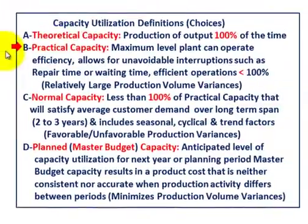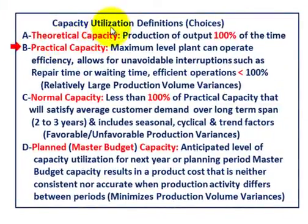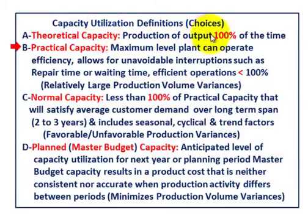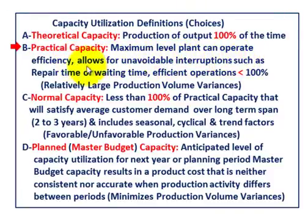The next thing to go over is our capacity utilization definitions — the choices we're talking about. First, theoretical capacity: the production the plant would put out at 100% of the time, at maximum with no downtime, no scheduling conflicts — a hundred percent capacity. That's a theoretical amount you're really not going to achieve. For practical capacity, this is the maximum level the plant can operate efficiently — it allows for unfavorable interruptions such as repair time and wait time, and provides for efficient operations, but it's less than 100%.